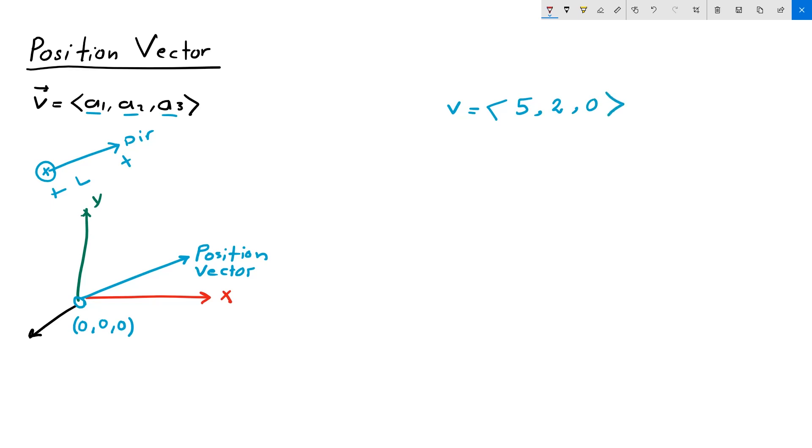That means that I have a 5 unit shift in the x direction, 2 unit shift in the y direction, and 0 unit shift in the z direction. Given my coordinate system, x, y, and z,